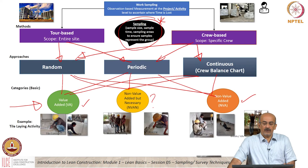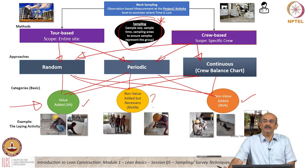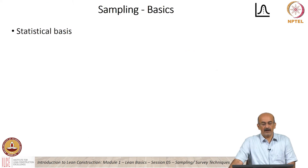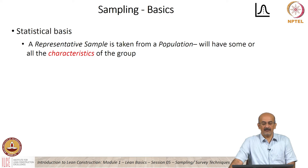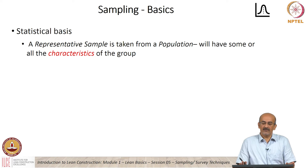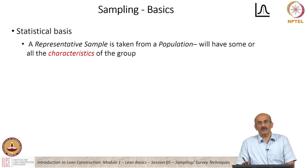A lot of what work sampling does, especially random sampling, is based on statistical sampling. When we take a statistical base, what we say is: if a representative sample is taken from a population, it will have some or all characteristics of that group.